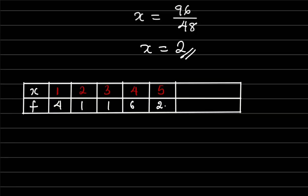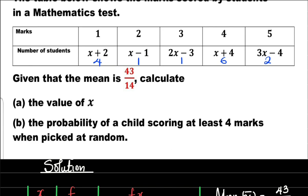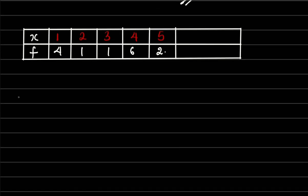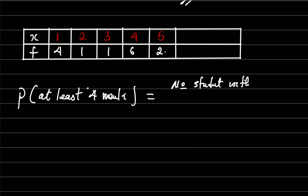Now to answer the last question which says the probability of a child scoring at least 4 marks when picked at random, this is what you are gonna do. Now you know the probability of at least 4 marks will be number of students with 4 marks all over total number of students.